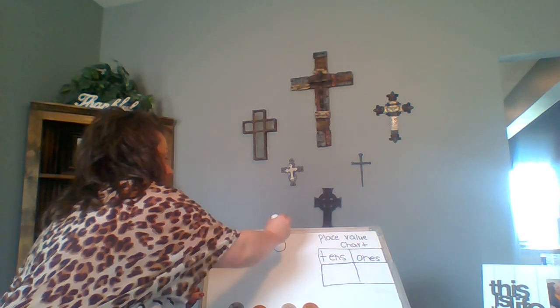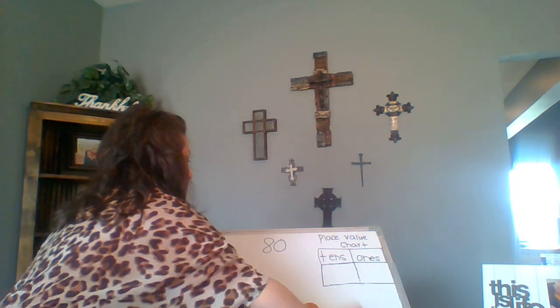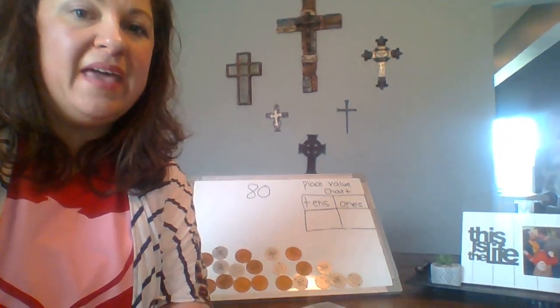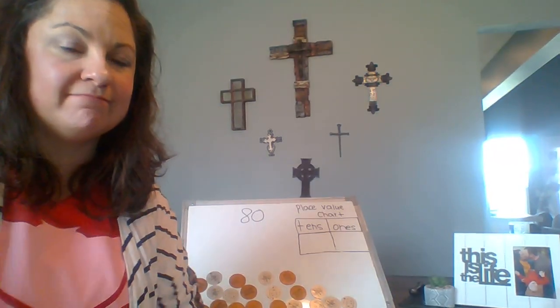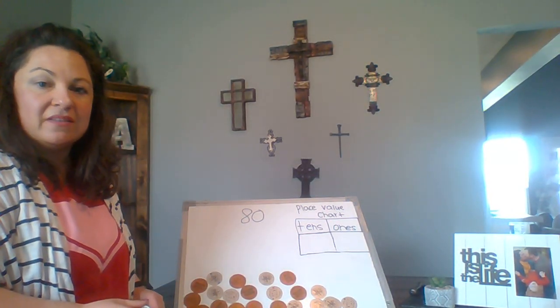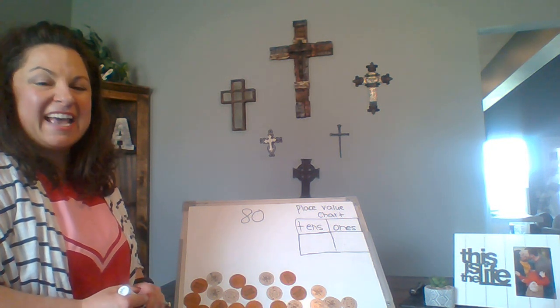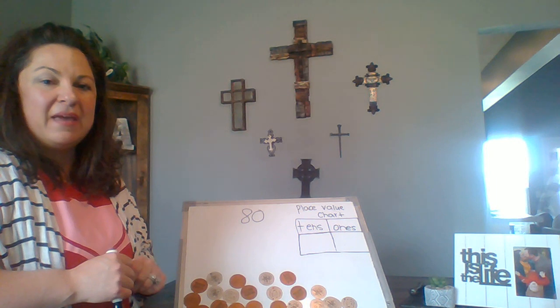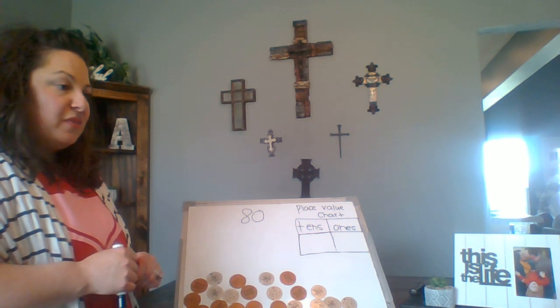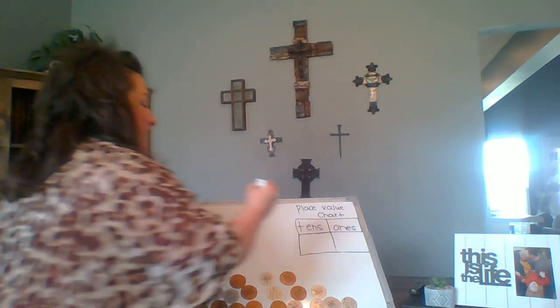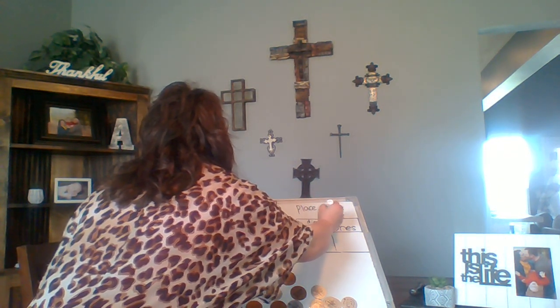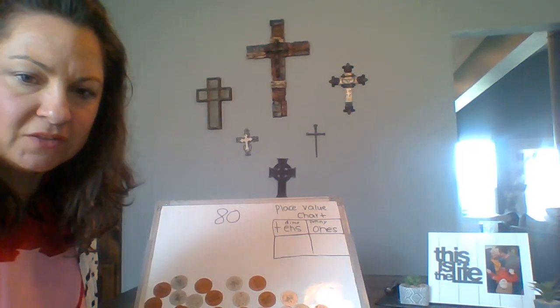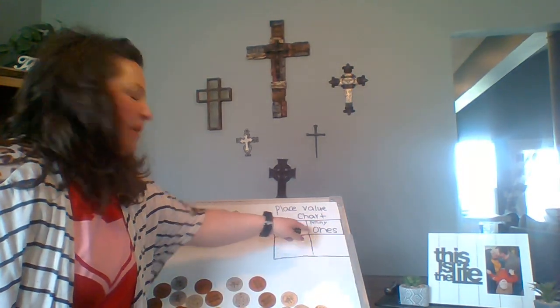So look at this number right here. That number is 80. So I want us to see if we could represent that number with dimes and pennies. Think about how much a dime is worth — do you remember? A dime is worth 10 cents, or 10, and a penny is worth 1 cent. So think about it like this: think about our tens as our dime, and our ones as pennies. I just wrote 'dime' above 10 and 'penny' above 1.